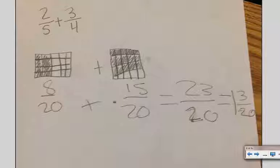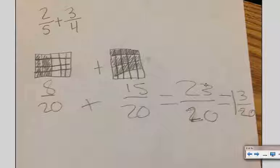So now my 2 fifths become 8 twentieths — I'm counting the same thing. Likewise, my 3 fourths now become 15 twentieths, which gives me like units that I can add. 20ths and 20ths are alike, so I can add them, and that gets me 23 out of 20. I know that there is 1 whole — 20 out of 20 — which would leave 3 twentieths remaining.